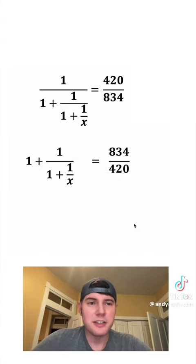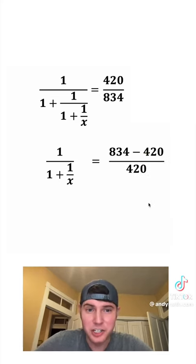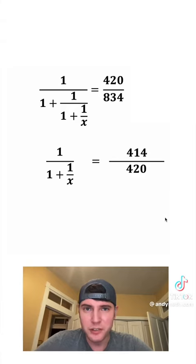Let's get rid of our parentheses and subtract 1 from both sides. This one and this negative 1 cancel. But on this side, we need a common denominator. So this negative 1 is going to become negative 420 over 420. And now that these match, we can write it as a single fraction. And 834 minus 420 is 414.